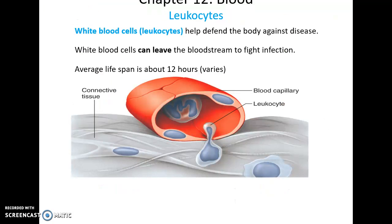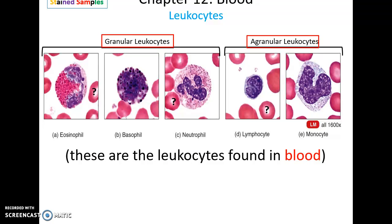Leukocytes are white blood cells that defend against disease. They can leave the bloodstream to go into tissues to fight infection, and their lifespan ranges from 12 hours to decades depending on the kind. There are two big categories: granular leukocytes, which include eosinophils, basophils, and neutrophils; and agranular leukocytes, called lymphocytes and monocytes. Granular leukocytes have large granules in their cytoplasm, while agranular leukocytes lack those.